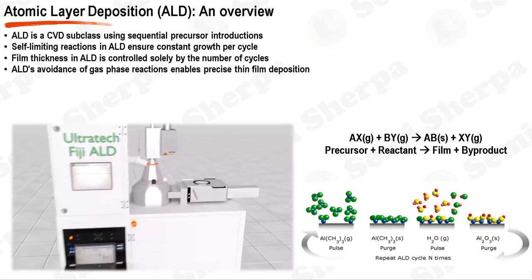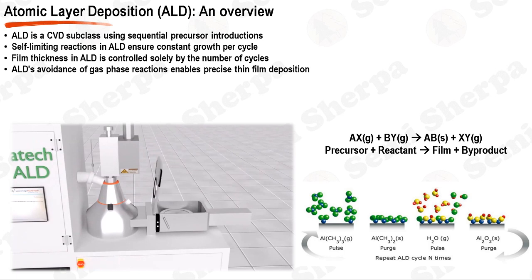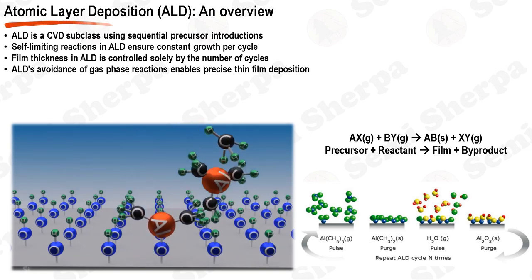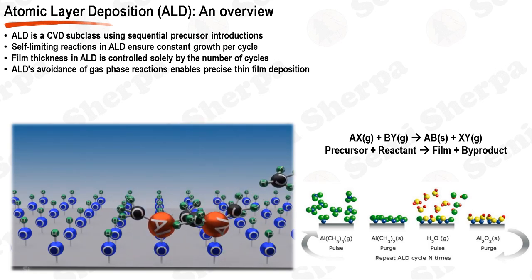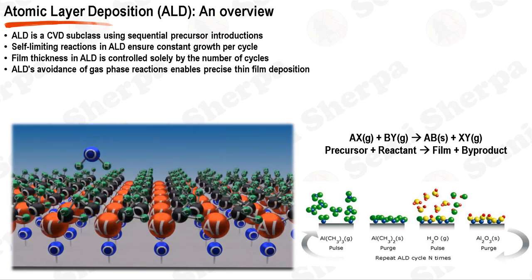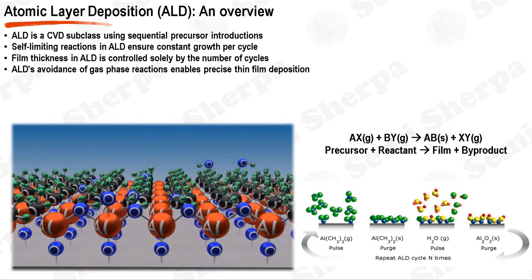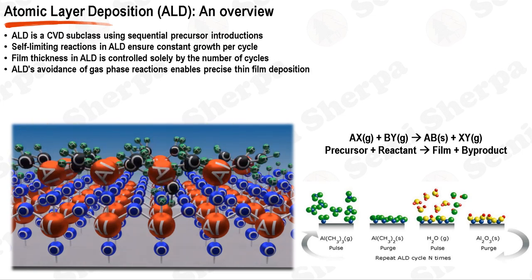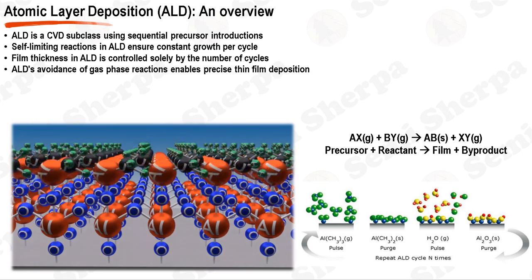Atomic layer deposition, ALD, is a powerful technique for the deposition of thin films with excellent control over thickness, uniformity, and composition. It falls under the category of chemical vapor deposition, CVD, methods, but differs significantly in its operation. In contrast to typical CVD processes, ALD uses sequential and separate introduction of precursors to the deposition chamber. Taking the deposition of Al2O3 as an example, trimethyl aluminum, TMA, and water, H2O, are typically used as precursors.